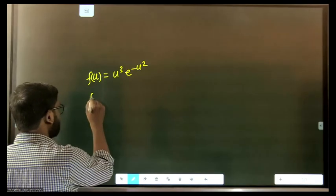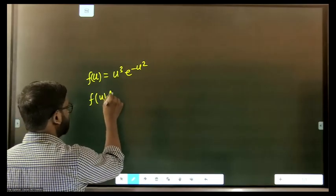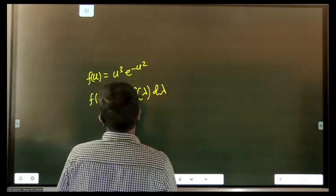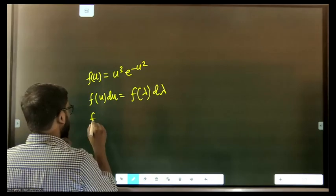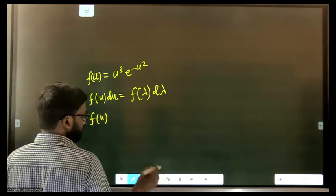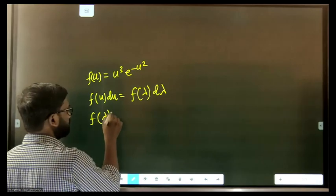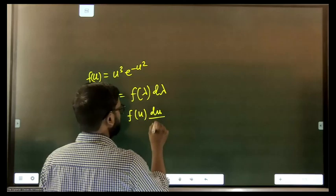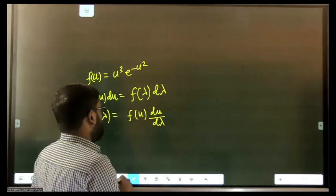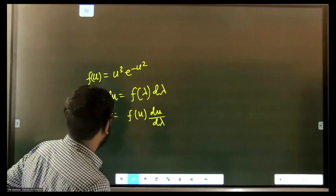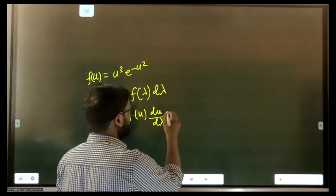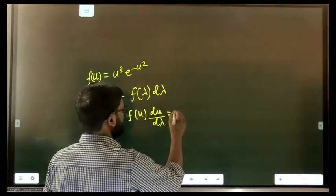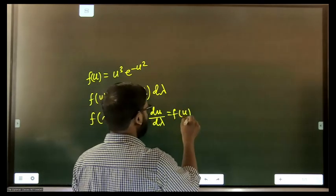We write: f(u) du = f(λ) dλ. Therefore, f(λ) = f(u) × |du/dλ|. So f(λ) equals f(u) multiplied by du/dλ. Now f(u) is u³ e^(−u²), which we will substitute later.